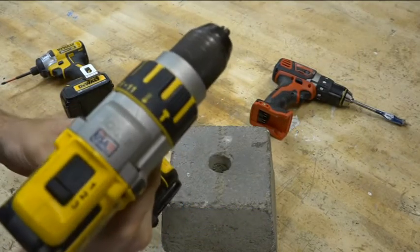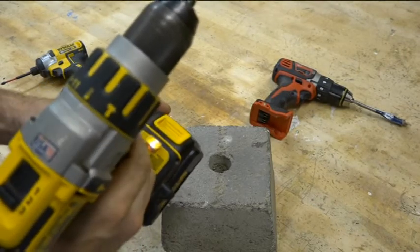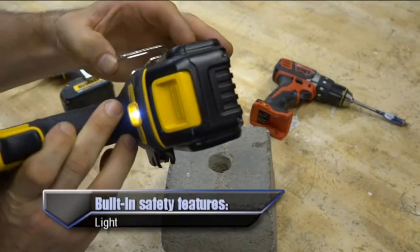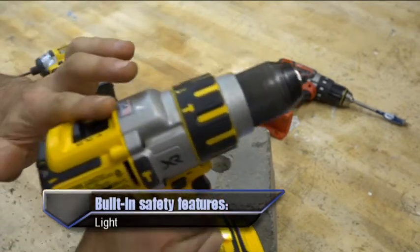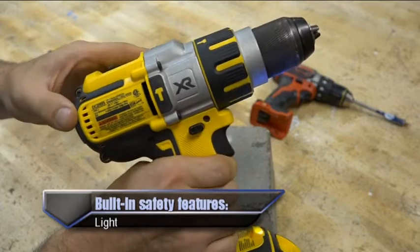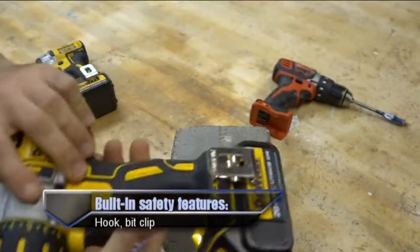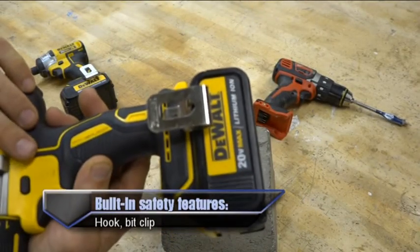Some parts on a drill are considered safety features. Some drills have an LED light that comes on upon depressing the trigger. Some drills have a level included on the top. Some drills have a belt hook and a drill clip.